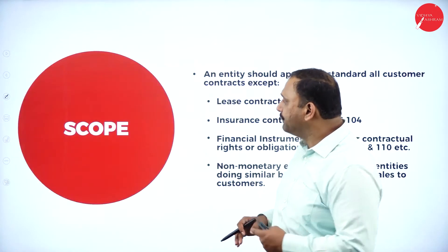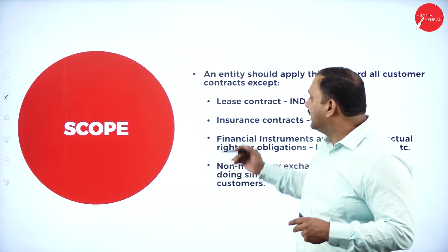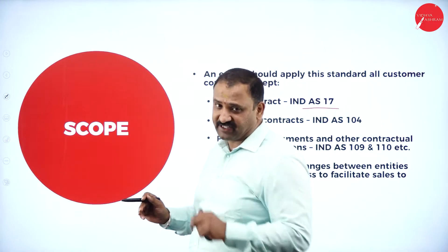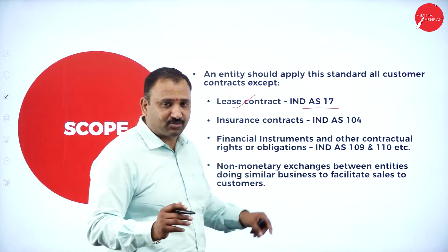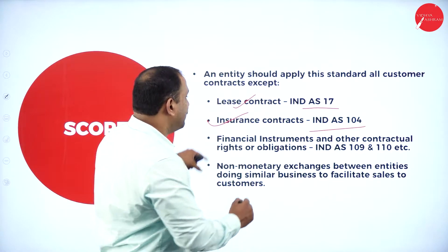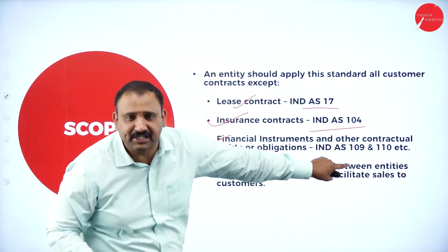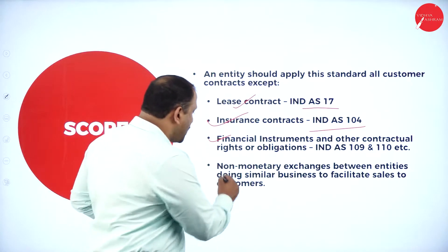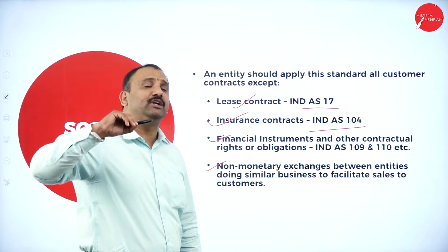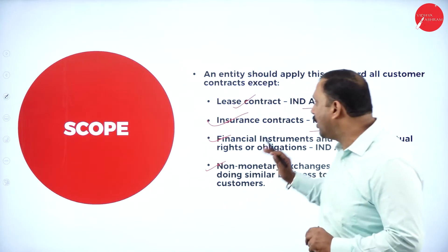This is where they involve themselves in the various accounting standards that are prescribed. Looking at the scope of this accounting standard: first, it covers lease contracts, which will be explained in Accounting Standard AS17. Then insurance contracts under AS104. Followed by financial instruments and other contractual rights and obligations under IND AS 109 and 110. And non-monetary exchanges between entities doing similar business to facilitate sales to customers.